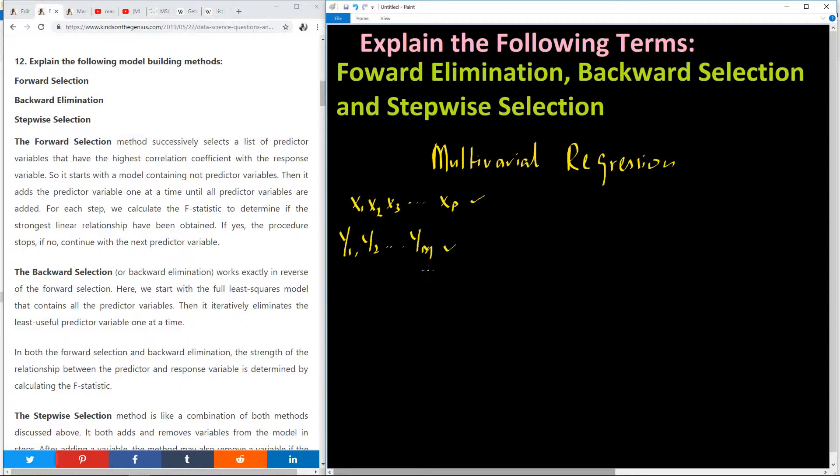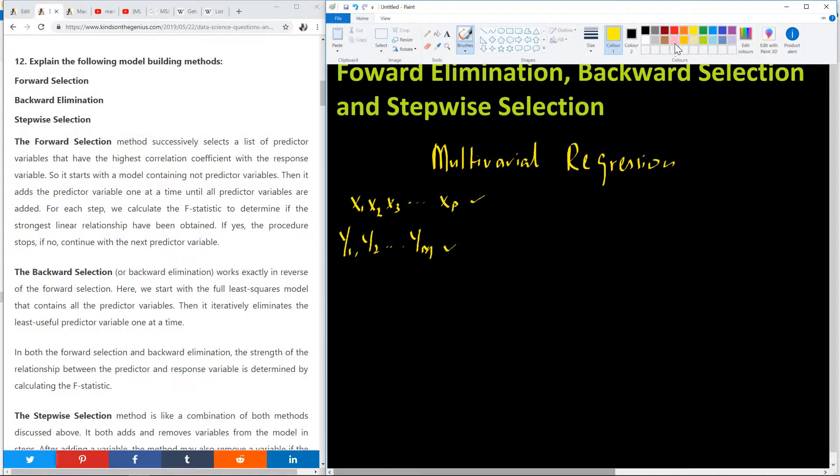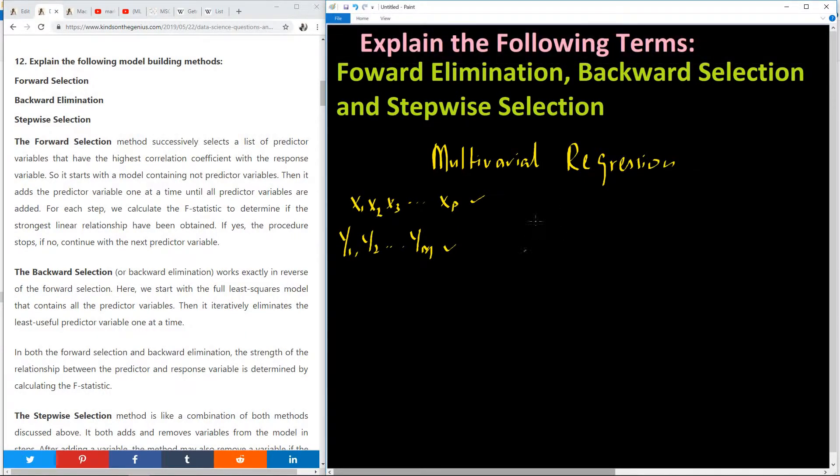And that is the concept of model building using different methods. Sometimes in textbooks, it may be called subset selection. So let me write it out so that you also have it in mind. Sometimes you may hear of subset selection. So the key thing about this particular question is you need to be able to explain in simple terms the three methods used for model building. So basically, how do you combine the variables as the model building progresses?